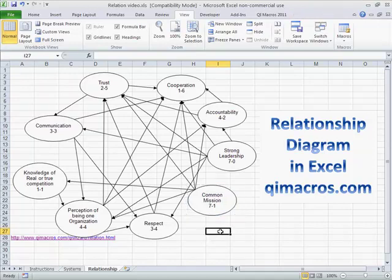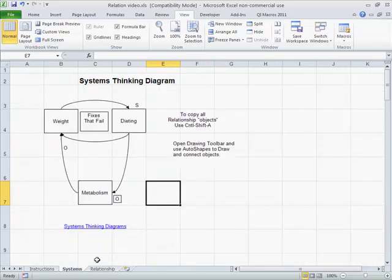So the relationship diagram is a way of starting to connect all these seemingly unrelated items. Another similar type of thing is a systems thinking diagram.